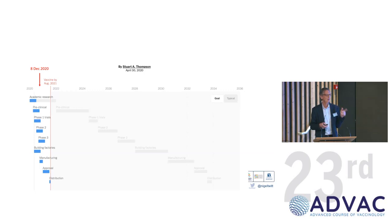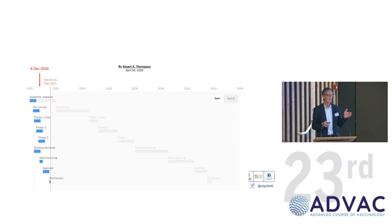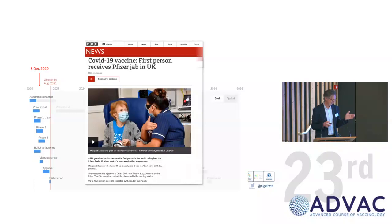Can anybody remember the name of the person who got the first vaccine? It was a lady, an old lady in the UK. Margaret Keenan. 8th of December, Margaret Keenan. It's good trivia for quizzes in the future.